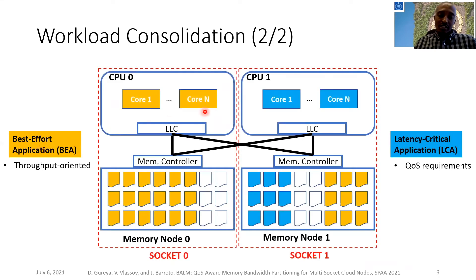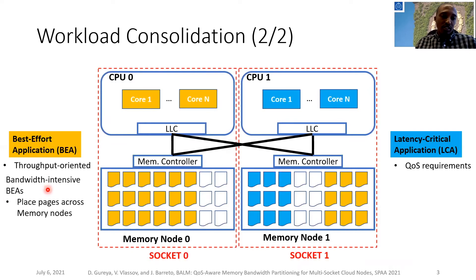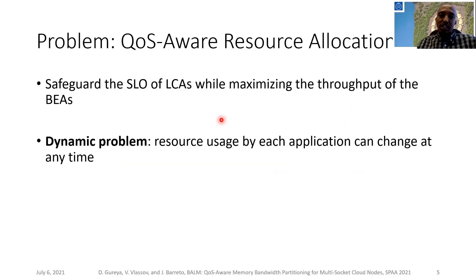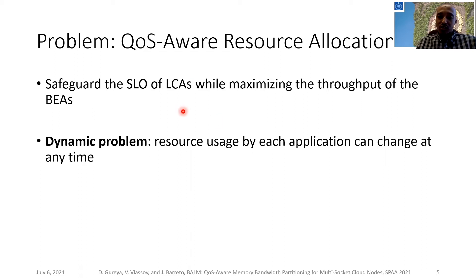Another technological trend with significant impact on workload consolidation is the preference for multi-socket systems in modern data centers. In such systems, bandwidth-intensive best-effort applications benefit by interleaving their datasets across all available memory nodes. However, co-located applications contend for shared hardware resources such as memory bandwidth, and this poses a challenging QoS-aware resource allocation problem: shared resources should be allocated to safeguard the SLO of latency-critical applications while maximizing the throughput of best-effort applications.